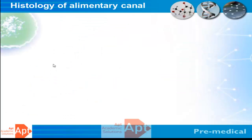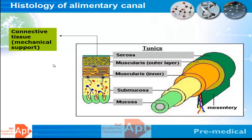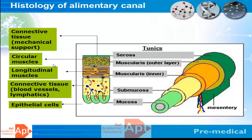Let's look at the histology of the alimentary canal. Throughout the entire alimentary canal, including the stomach, the histology remains largely the same. The outermost layer is called the serosa, which is a protective layer. Below the serosa is the muscle layer, which can be divided into the circular muscle and the longitudinal muscle. The longitudinal muscle helps in contraction of the organ and plays a critical role in digestion.